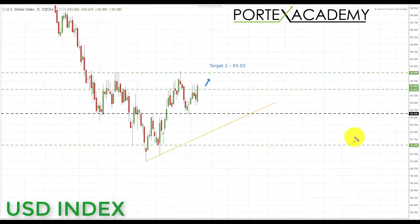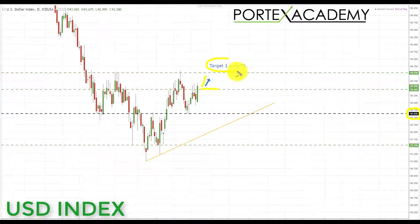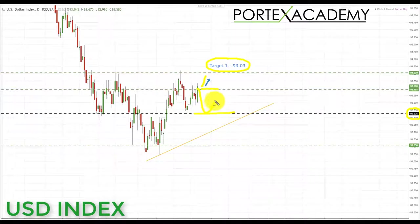Starting with the US dollar index. We bounced from the key area of support at 92.635 last week and we were looking up towards the target of the 93.455 area, which we actually completed last week. We go into next week above this key area of resistance at 93.455 and so we are looking for further advances in the US dollar index. As long as we stay above this key area of resistance we're looking up towards the target of 93.03. If we break back down below this key area of resistance we'll be looking back down towards the 92.635 area of support.